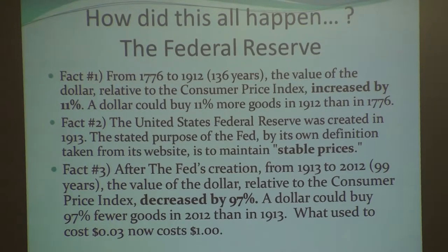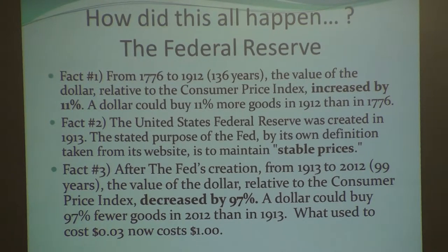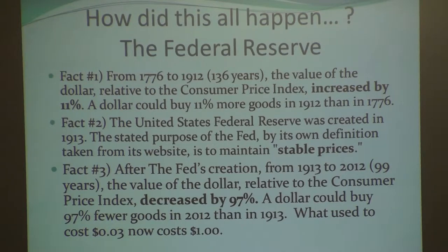Then in 1913, Woodrow Wilson decided to let this banking cartel print all our money. Their stated purpose, if you go to their website, is to maintain stable prices — that's what they tell the public. But we already had stable prices; it would move up and down a little bit but stay about level.